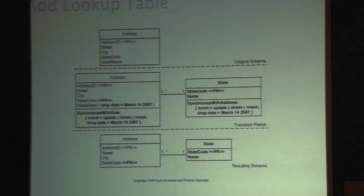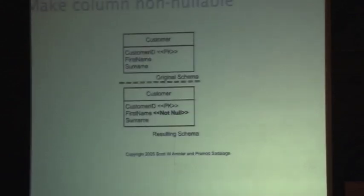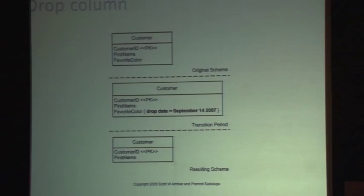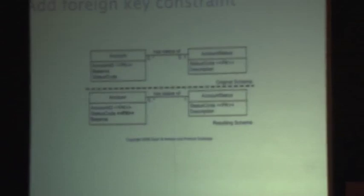Here is a refactoring called 'add lookup table' and then we have 'make column nullable.' I am not going to talk in detail about this, but the same kind of structure applies. A good situation may be like if you are in a green field project — a brand new project that is not legacy, does not have any other applications talking to you — most likely you do not need the transition layer in the middle. So you can just drop the column off immediately.